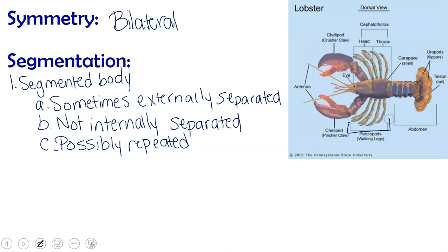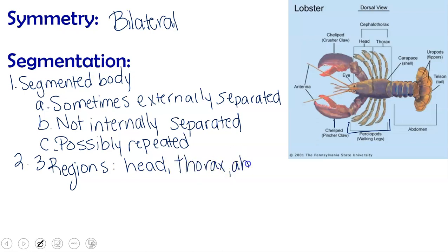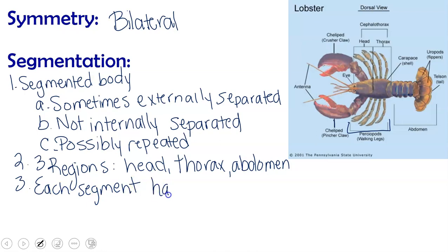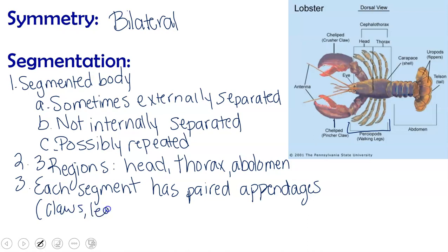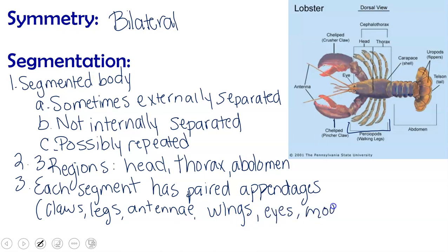Generally speaking, arthropods have three regions: the head, the thorax, and the abdomen, each with its own set of segments. Each arthropod segment typically has paired appendages. Appendages are basically something that sticks off the body, and these can include things like claws, legs, antennae, wings, eye stalks, mouth parts, or tails — all possible paired appendages that arthropods may have.